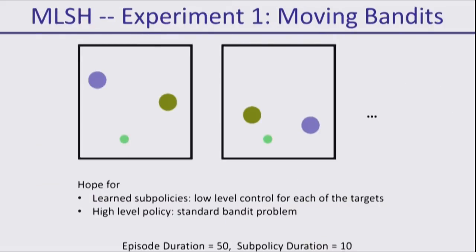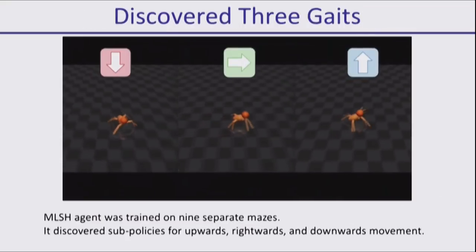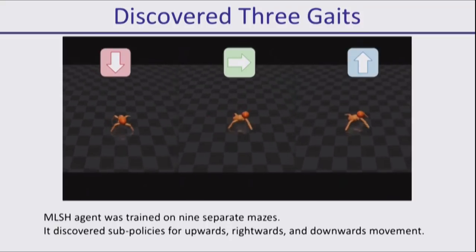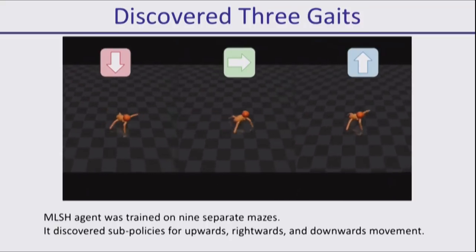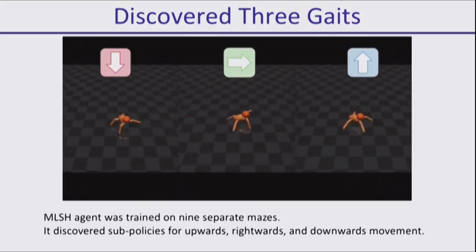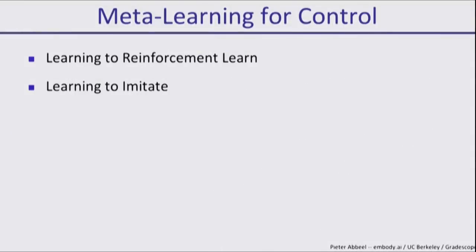What you see then is that, for example, for the moving bandit problem, it learns sub-policies to go to specific types of bandits. For an ant that's supposed to navigate mazes, it learns different low-level gaits moving diagonally down, sideways, or diagonally up. It discovers those not by us telling it we want these gaits, but by that those are the gaits that allow a master policy on top of this to maximally quickly adapt to new environments. Here are a few references you can look at later.